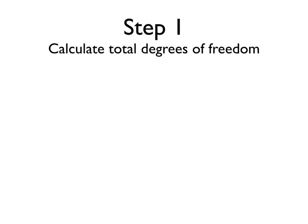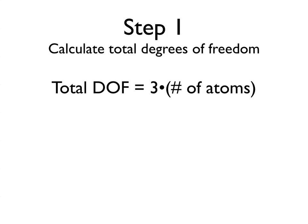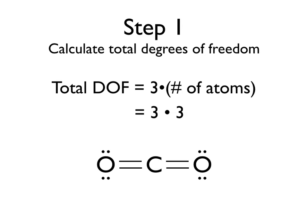Our first step is to calculate the total number of degrees of freedom for our CO2 molecule. A degree of freedom notes the different motions or ways in which a molecule can move to accommodate heat, and the total number of degrees of freedom in a molecule is given by 3 times the number of atoms in it. Here we're looking at CO2, which has 3 atoms, so 3 times 3 gives us 9 total degrees of freedom.